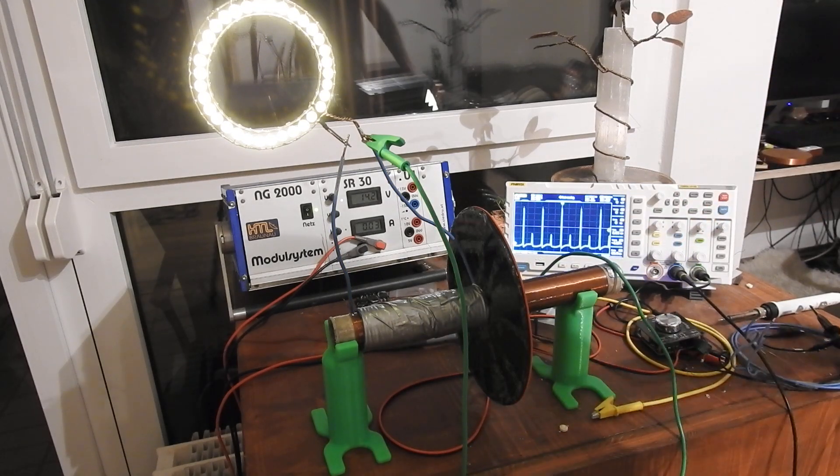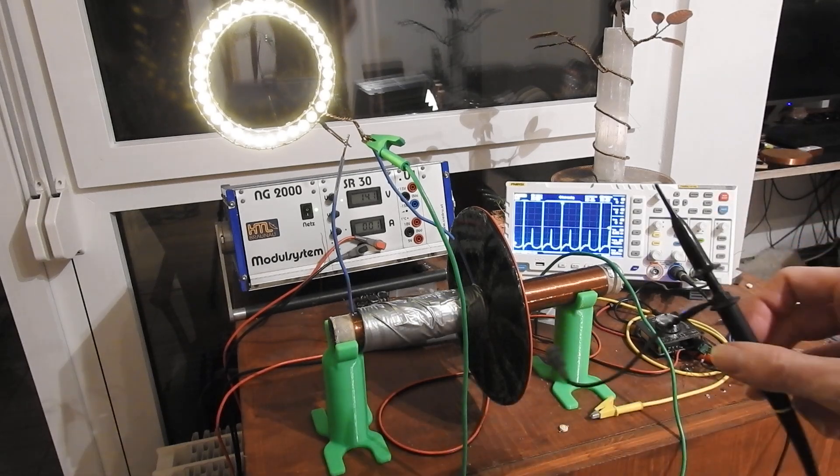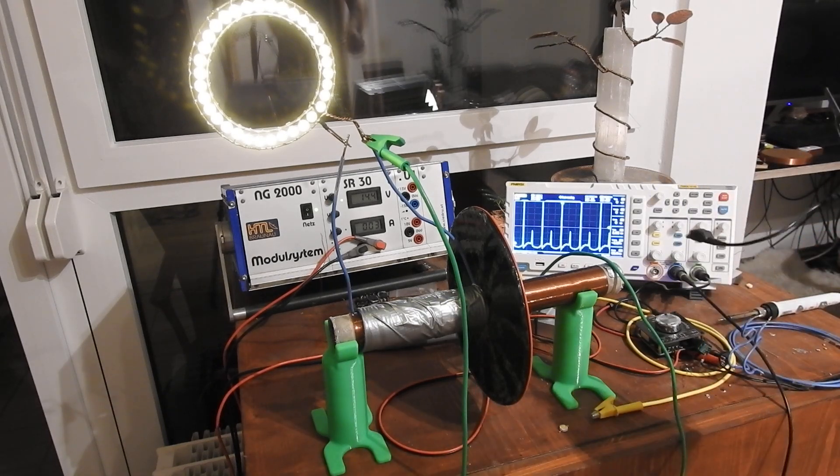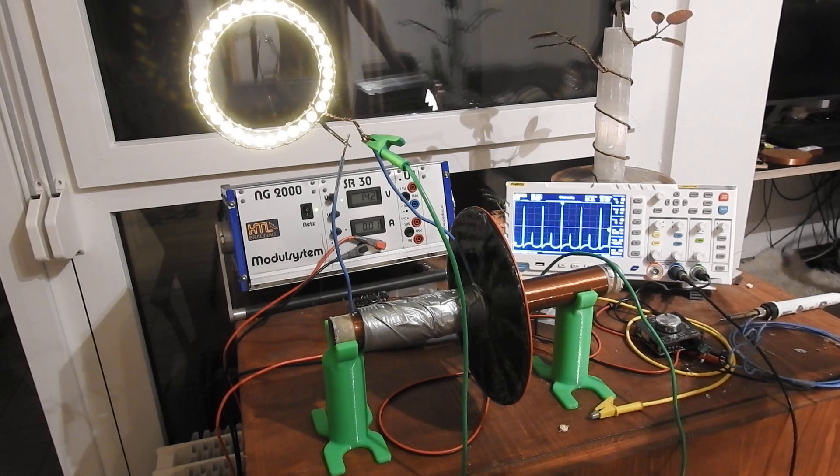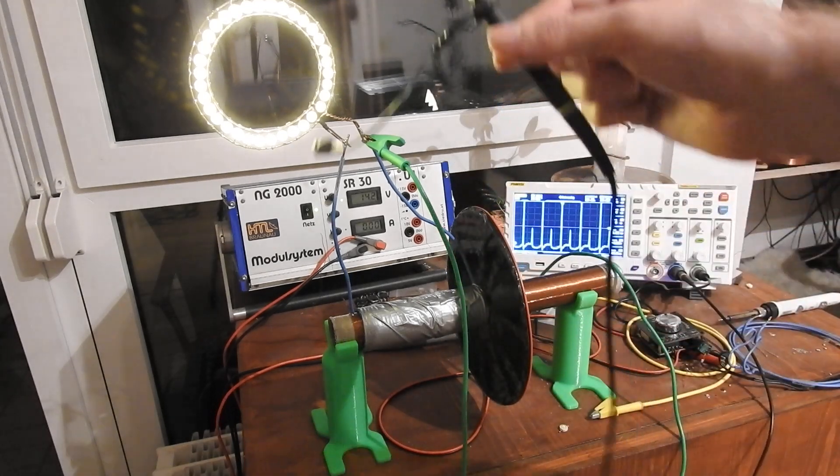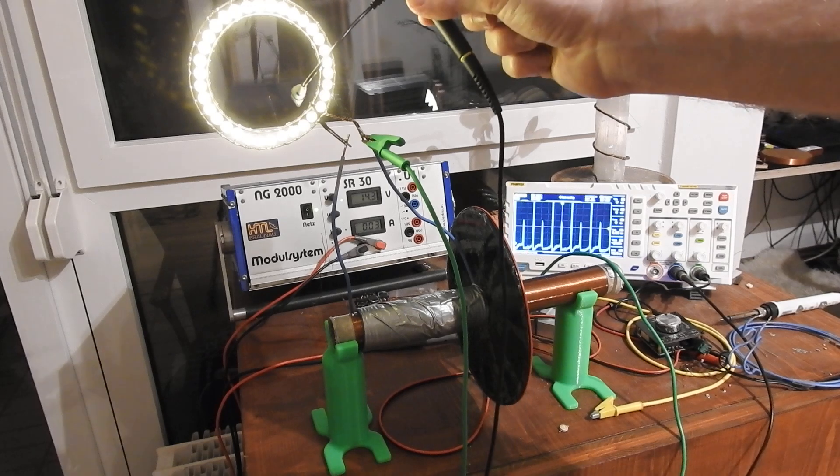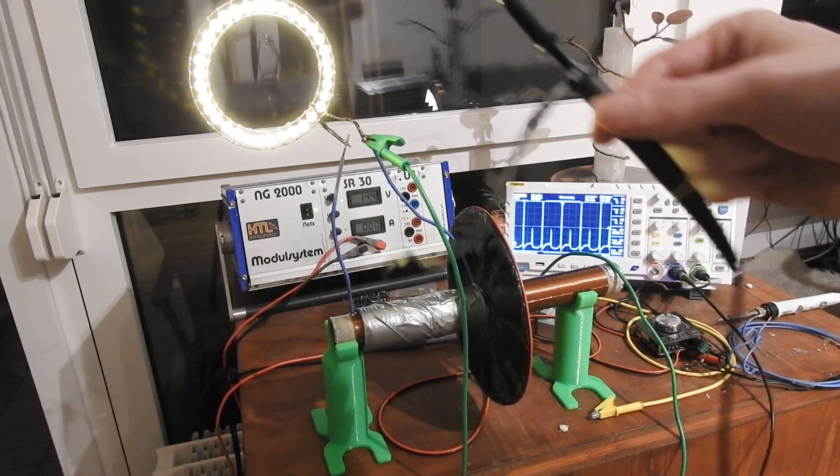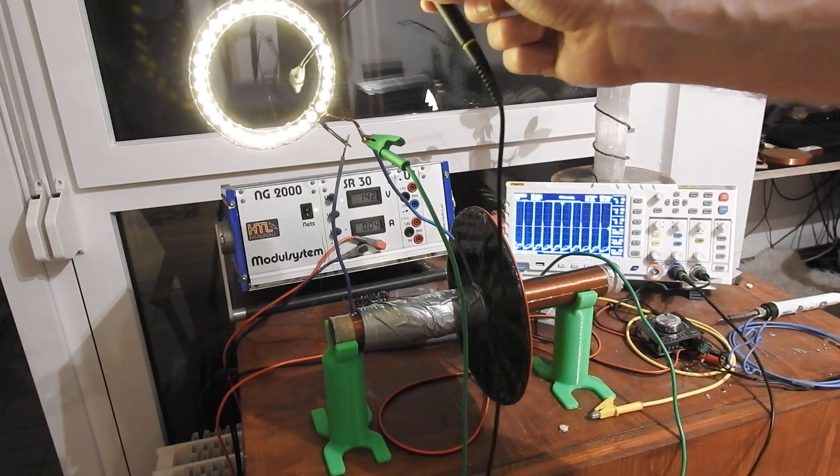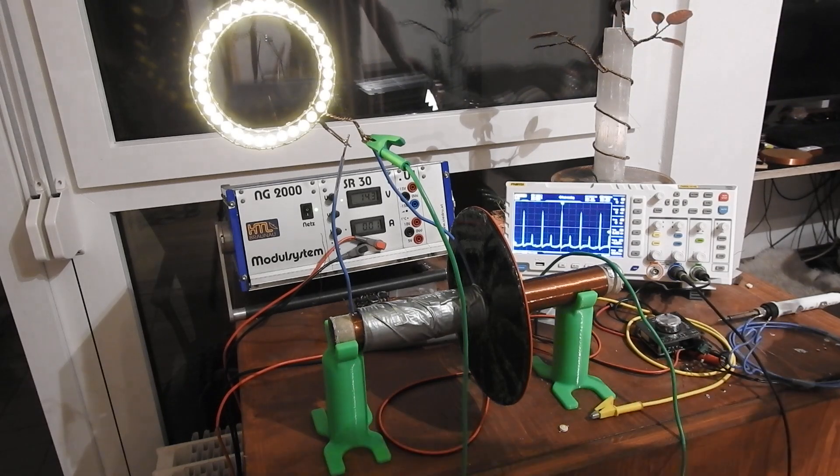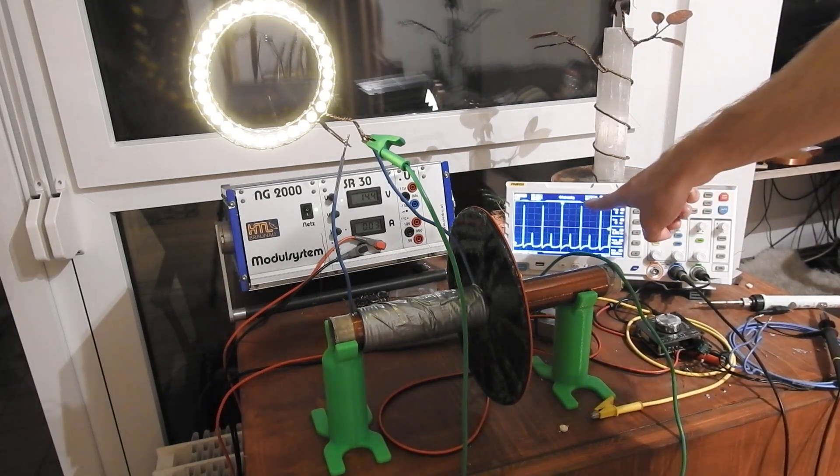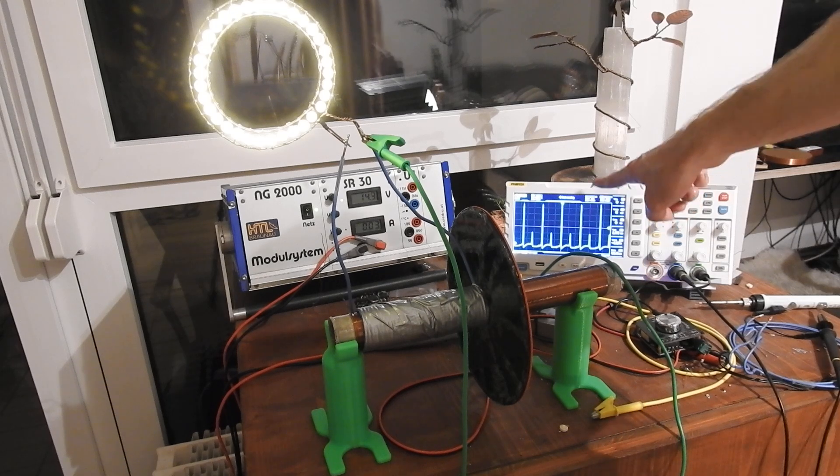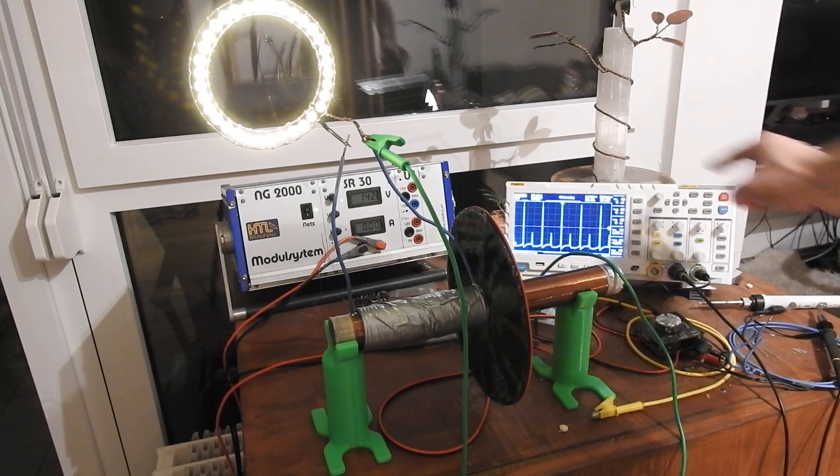And on the oscilloscope you can already see the signal that is picked up with this probe that is just laying right here. It's not connected to anything. And as you can see if I come closer the amplitude also gets higher of course. But these high voltage spikes that you see here are already exceeding what the oscilloscope can show.